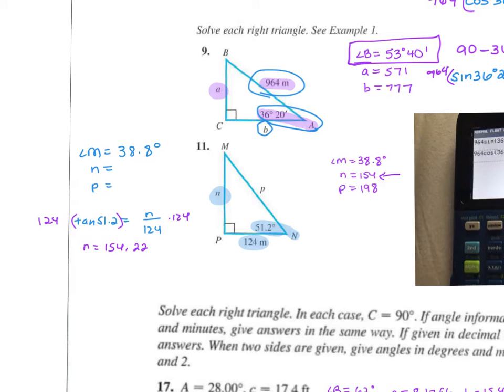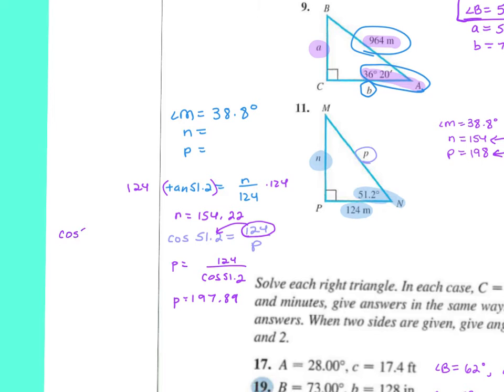If you want to find P, we're still using N and side M. This is now adjacent and hypotenuse, which is cosine. Cosine of 51.2 equals 124 over P. Now, the number's in the top. So, the shortcut is to take that number and divide it by the other side. I'd get 124 divided by the cosine of 51.2. And I get P equals 197.89. That's going to round to that 198. If you didn't do the shortcut, I can take cosine 51.2 equals 124 over P. I can put that left side over 1. I can cross multiply, and then I can divide. It still gives you the same thing to type into the calculator.